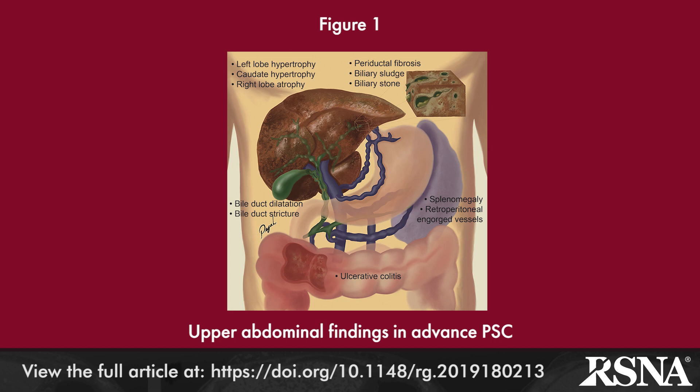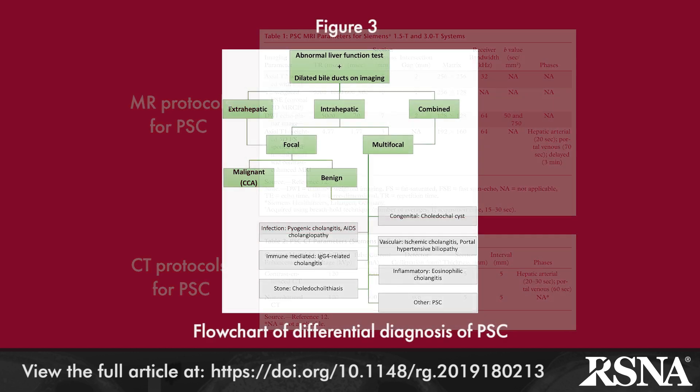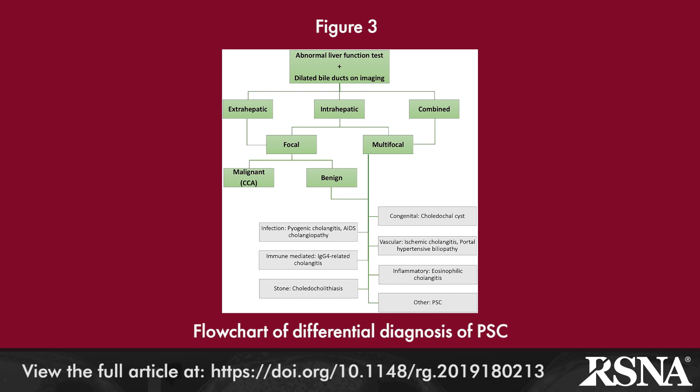Figure 1, provided by the first author, summarizes the end-stage results of PSC. After a brief review of the disease, the article delves into the imaging manifestations of PSC and provides protocols for MR and CT imaging of affected patients. The diagnosis of PSC is made by the presence of typical features at cholangiography after secondary causes of sclerosing cholangitis are excluded.